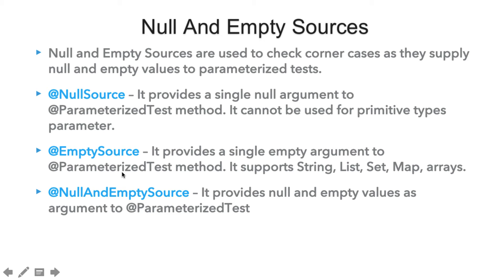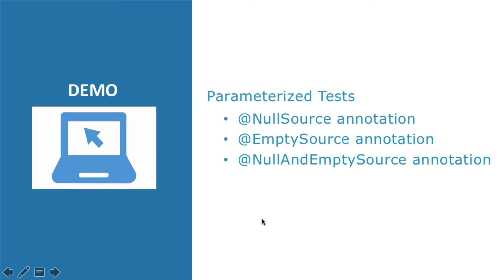If you want to combine these two, we can simply provide @NullSource and @EmptySource to get both null and empty values. But we can also combine them into a single annotation, which is @NullAndEmptySource. This will provide both null and empty values to our @ParameterizedTest. Now let's go to Eclipse and see the demonstration.